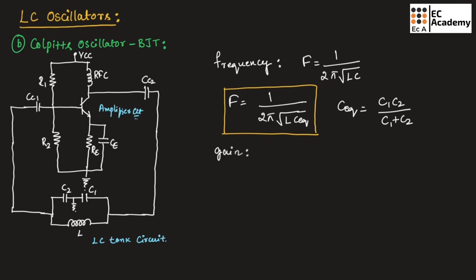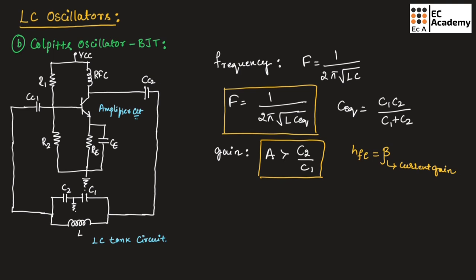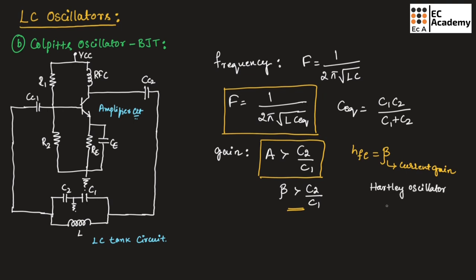Now let us find the gain. The gain of the Colpitts oscillator A should be greater than C2 / C1. Here, gain is represented in the form of H_FE, which is beta — the current gain. Therefore, beta should always be greater than C2 / C1. Similarly for the Hartley oscillator, the gain in terms of current gain is beta should be greater than L1 / L2. Remember this for the Hartley oscillator.